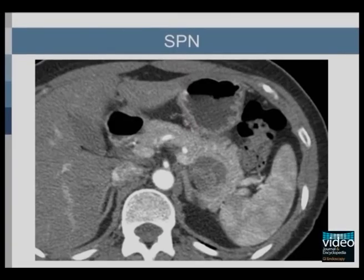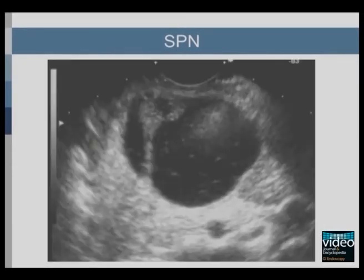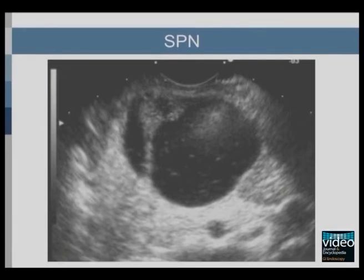A solid pseudopapillary neoplasm is seen on CT as a heterogeneous, partially solid and partially cystic mass. Calcifications may be seen occasionally, as seen on the CT of another patient. On EUS, solid pseudopapillary neoplasm may be solid, mixed solid and cystic, or cystic — here we see a cystic lesion with septation.